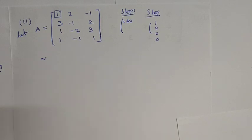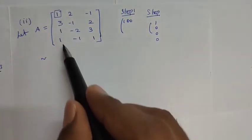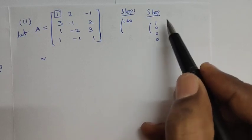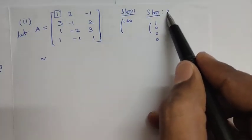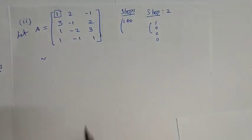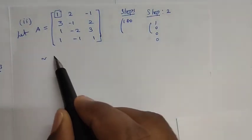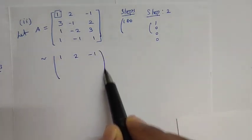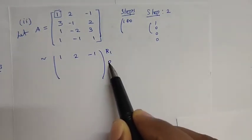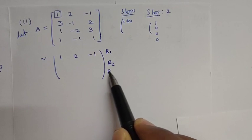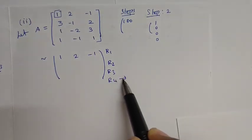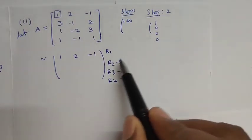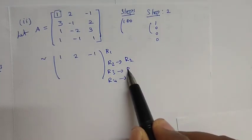There are four rows. The first one has a non-zero remaining element. Step 2 is applied to the first matrix — R2, R3, R4. Step 2 is the same for each.